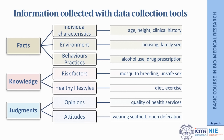Secondly, we might want to know their level of knowledge for things such as risk factors for getting disease or knowledge about healthy lifestyles so as to prevent diseases. And thirdly and very importantly, we might want to collect information on what we call the domain of judgments — basically what are the opinions of the research participants on a certain issue, perhaps such as quality of health services. We may also want to know about the respondents' attitudes towards certain things, for example wearing seat belts, use of open defecation, and so forth.